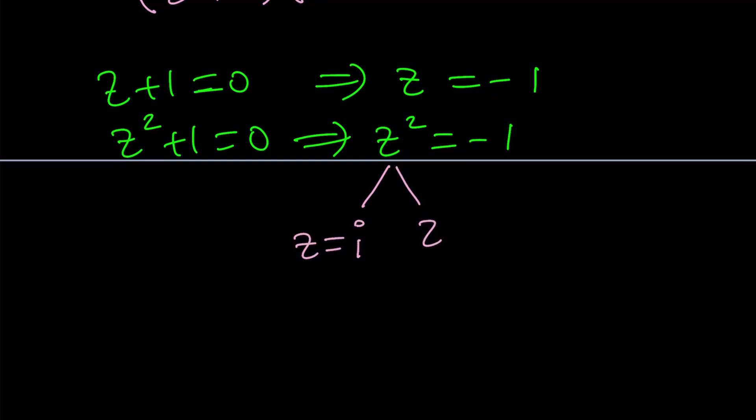So z can be i or negative i. A lot of times people say what's the square root of negative 1? i. Well there are two square roots i and negative i because when you square both or either one you get negative 1. So there are two solutions and a total of three solutions to this equation. z equals i z equals negative i and z equals negative 1.